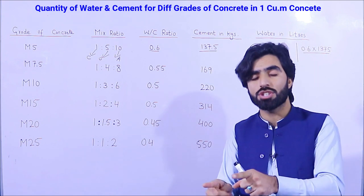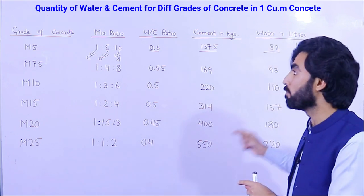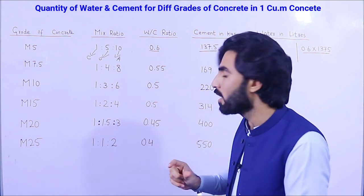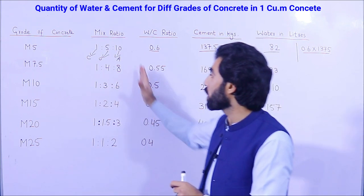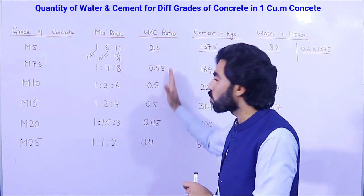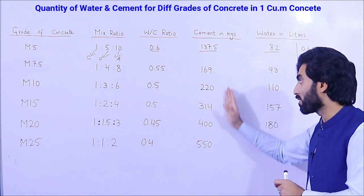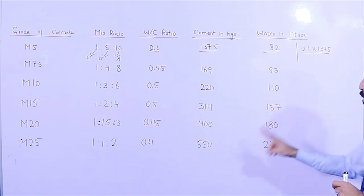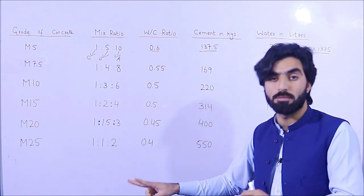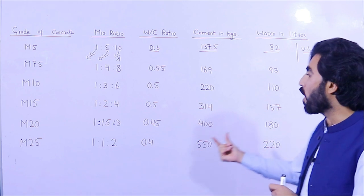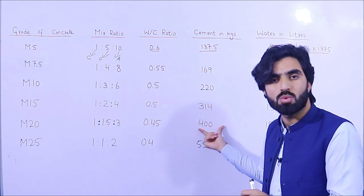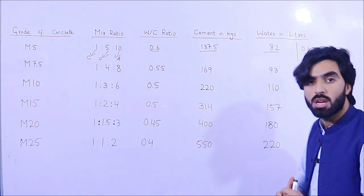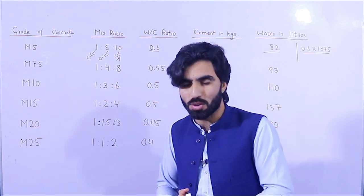These are very important and useful notes. If you are working on a construction site or are a student, you should remember the grade of concrete, its mix ratio, and its water-cement ratio. To find how much water is required, multiply the water-cement ratio by the total cement in kg — and since one liter equals one kg, you get the water quantity in liters.